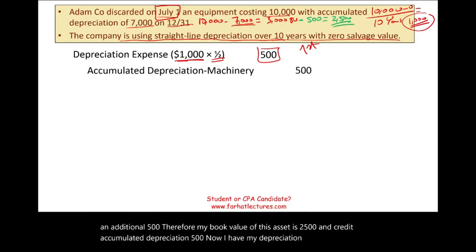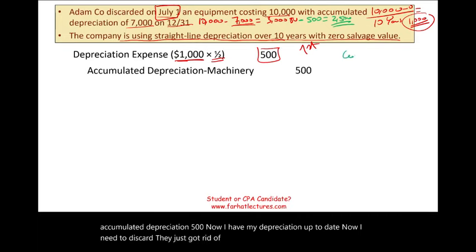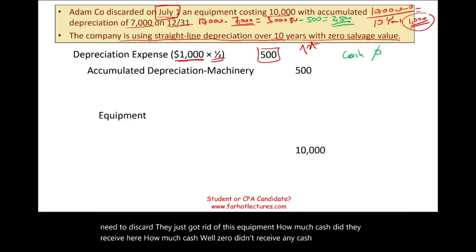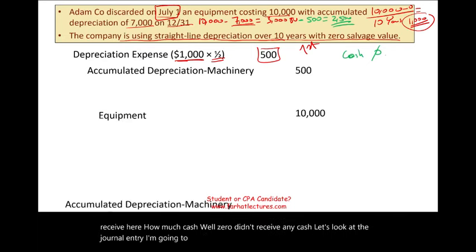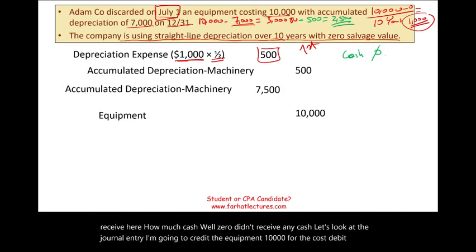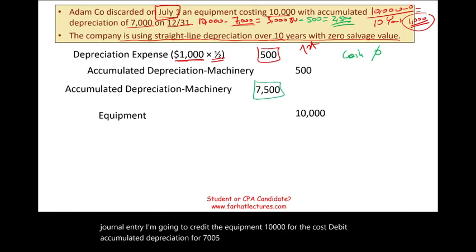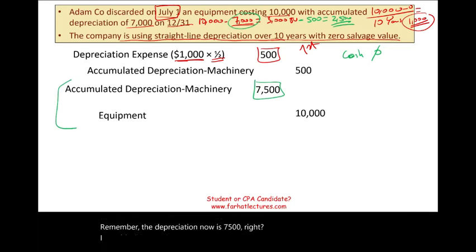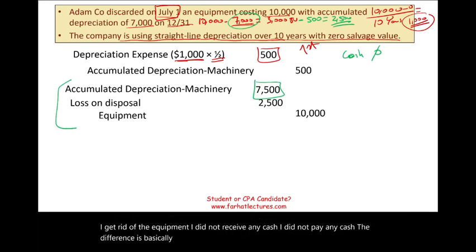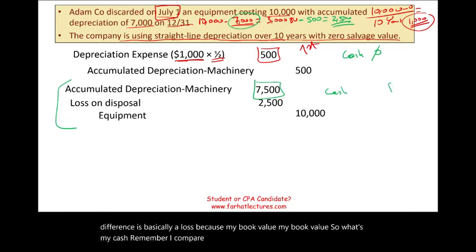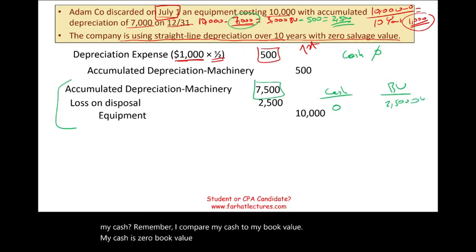Now we discard the equipment. How much cash was received? Zero — they didn't receive any cash. The journal entry: credit equipment $10,000 for the cost, debit accumulated depreciation $7,500 (now updated). No cash received, no cash paid. The difference is a loss because the book value is $2,500 and cash received is zero.